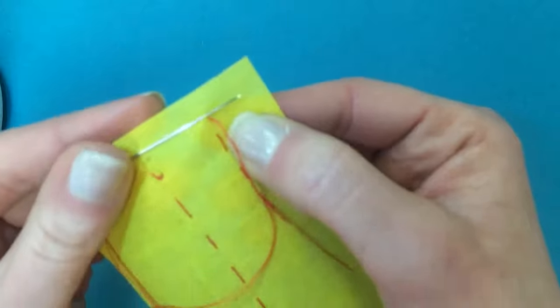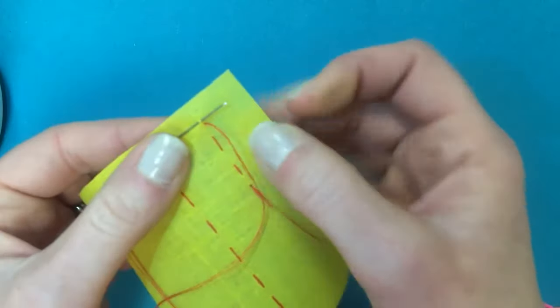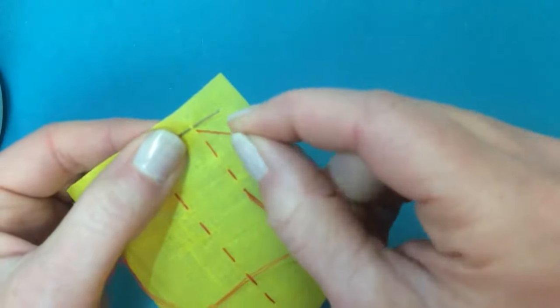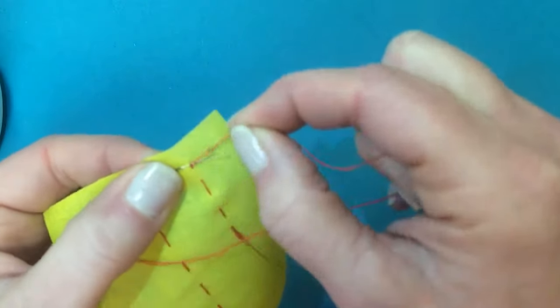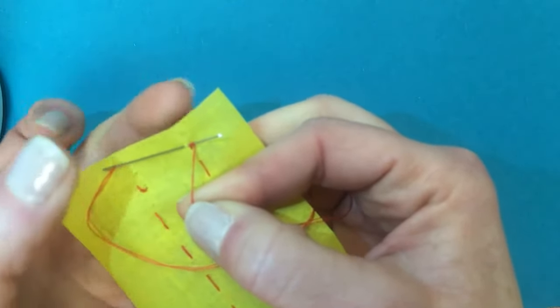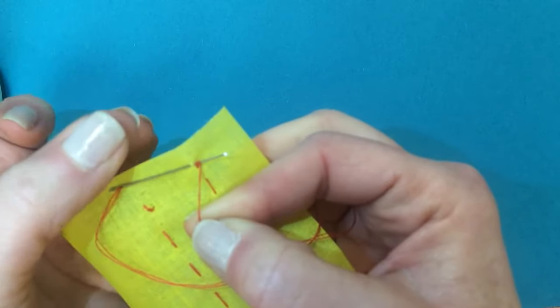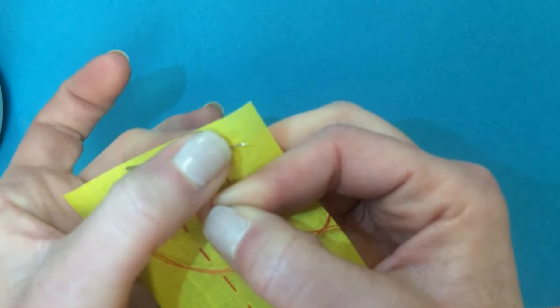Where the thread comes out of the fabric, I'm going to take it between my fingers and wrap it tightly around the needle.